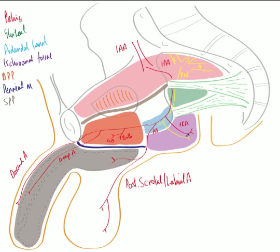The inferior rectal nerve is a somatic nerve that goes on to supply the external anal sphincter. Within the pudendal canal, the pudendal nerve also gives rise to the dorsal nerve, which courses through the deep perineal pouch alongside the dorsal artery of the penis or clitoris, to supply the skin around the dorsum of the penis — or the clitoris in the female.